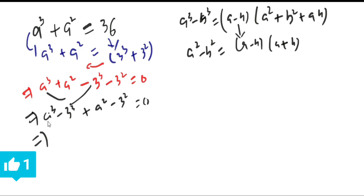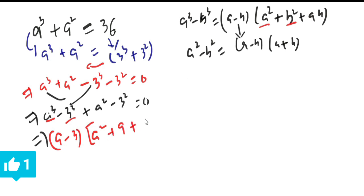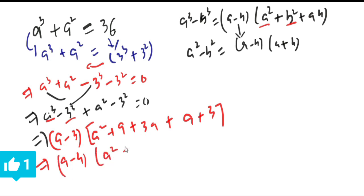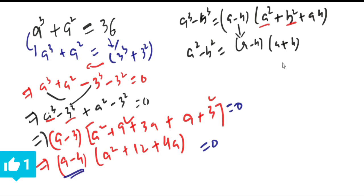Here a is a and b is 3, so we take the common factor (a - b), meaning (a - 3), and the remaining terms are a² + 9 + 3a, plus from the square identity (a + 3). So this gives us (a - 3)(a² + 3a + 9 + a + 3) = (a - 3)(a² + 4a + 12) = 0.